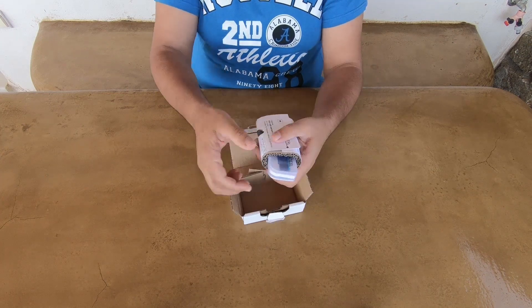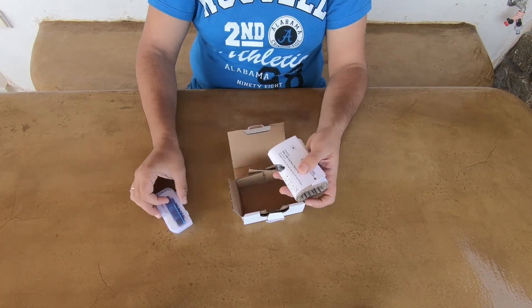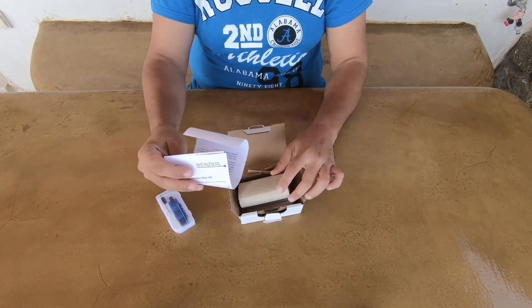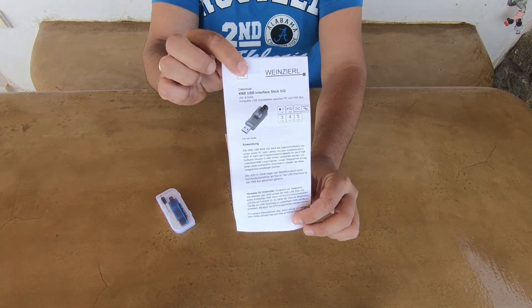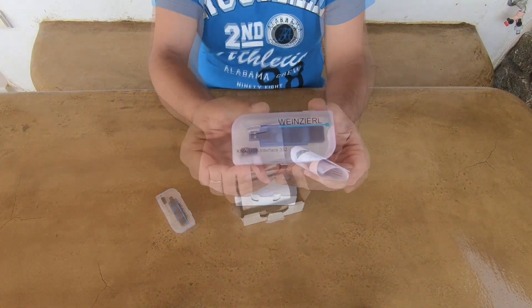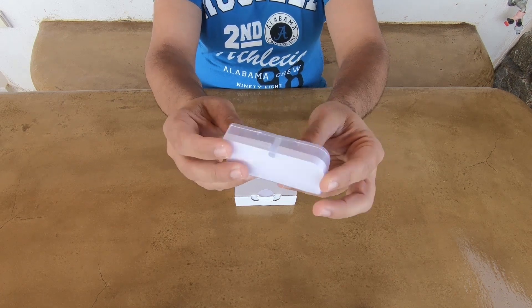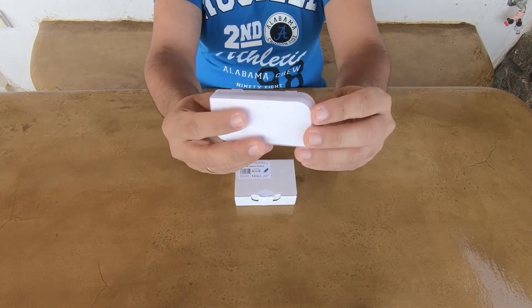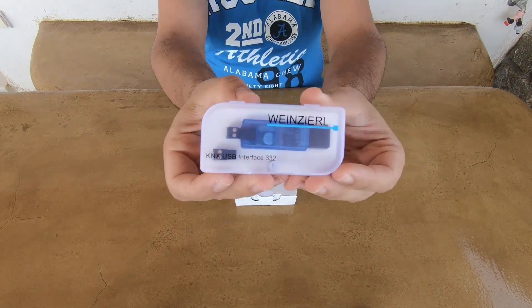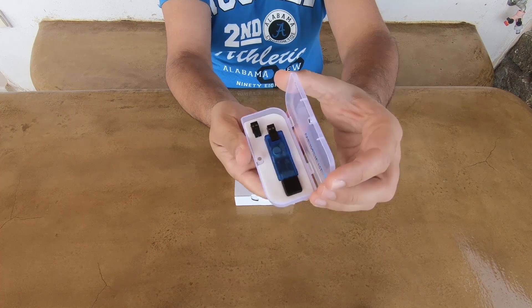Inside the box you will find the USB Interface with its box and the datasheet. The USB Interface is inside this beautiful box. The box has a magnetic lock.